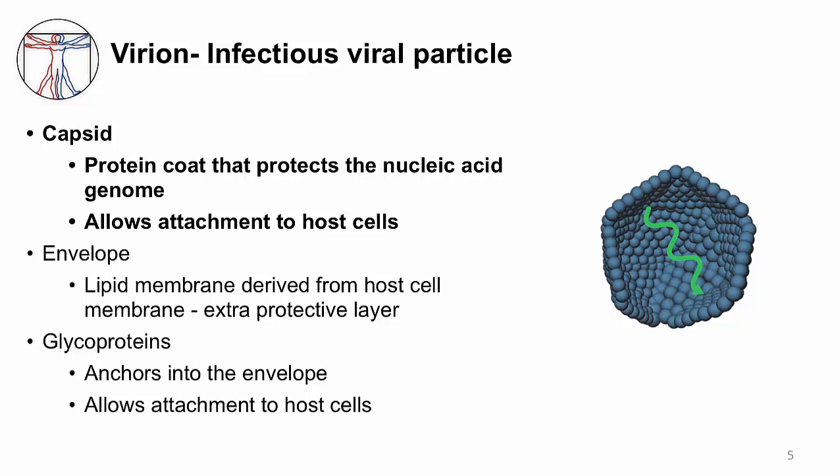An infectious viral particle is called a virion, and is composed of a limited number of structures. First is the capsid — a protein coat that protects the nucleic acid genome. It's important that the nucleic acid genome is protected, otherwise the virus cannot replicate and reproduce. The capsid also allows the virus to attach to host cells.